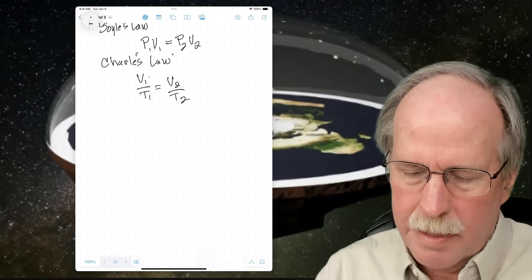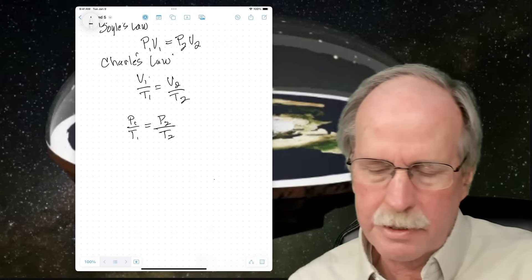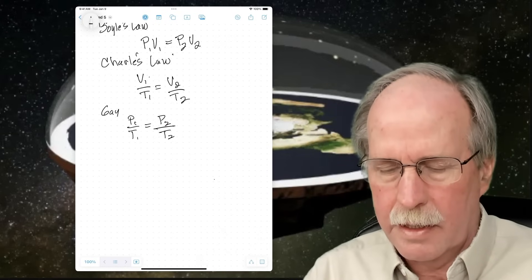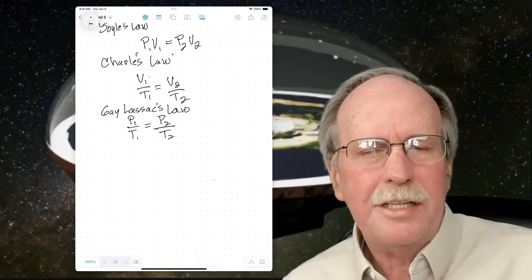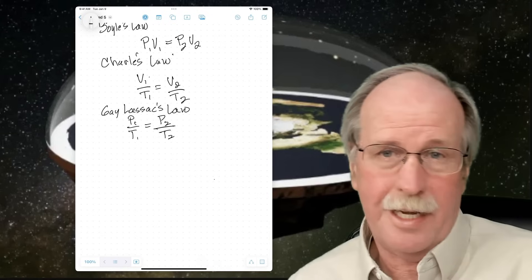Now what happens if we hold the volume stable, and we change the temperature or the pressure? Well, that comes up to this. P1 over T1 equals P2 over T2, and that is called Gay-Lussac's law. I did this on a flat earth forum the other day, and they all got a case of the giggles because it's Gay-Lussac's law. Childish.